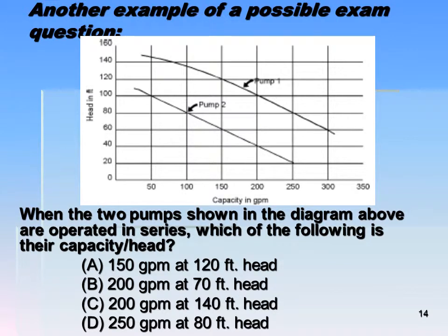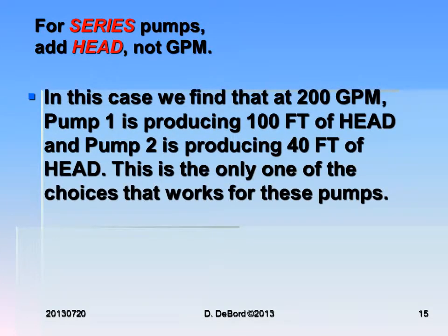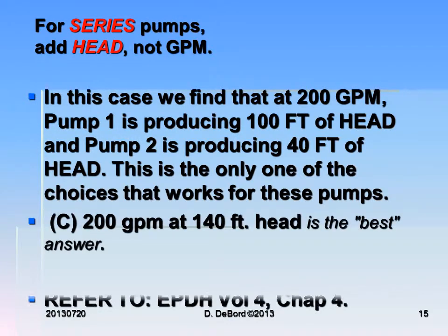At 200 GPM, we have 40 feet of head from one pump and 100 feet of head from the other, so that's 140 feet of head — so it's not B. At this point we've eliminated everything else, so what remains must be the answer. We find that at 200 GPM, pump 1 is producing 100 feet of head and pump 2 is producing 40 feet of head. That's the only choice that works for these pumps in series — answer C: 200 GPM at 100 feet of head is the best answer. None of the other choices A, B, or D fit the pump profiles except for C.